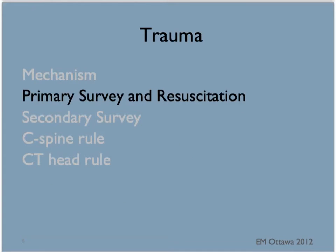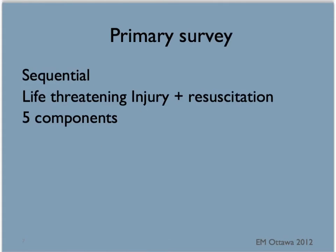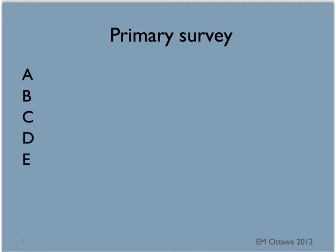Now that we know a little bit about the mechanism, we'll approach the patient with the trauma primary survey. The primary survey is your first trauma assessment. The steps must be done sequentially — we do not go to the next step until the previous component is corrected. The objective is to identify any life-threatening injury and resuscitate the patient quickly. There are five components: airway, breathing, circulation, disability, and exposure.